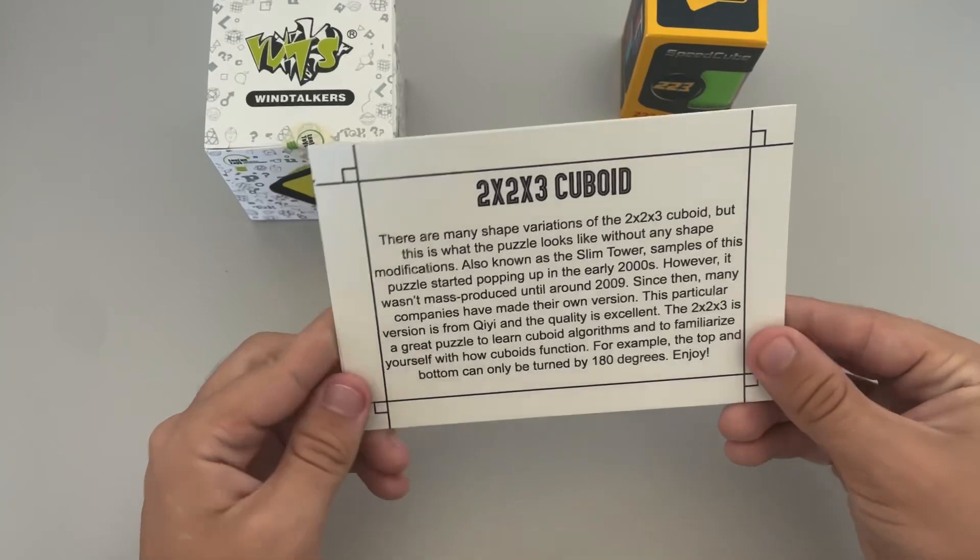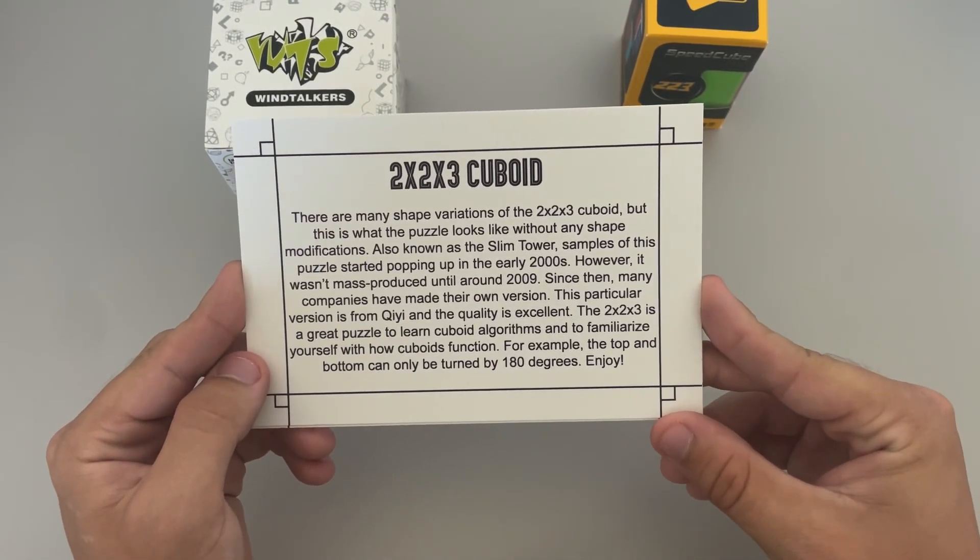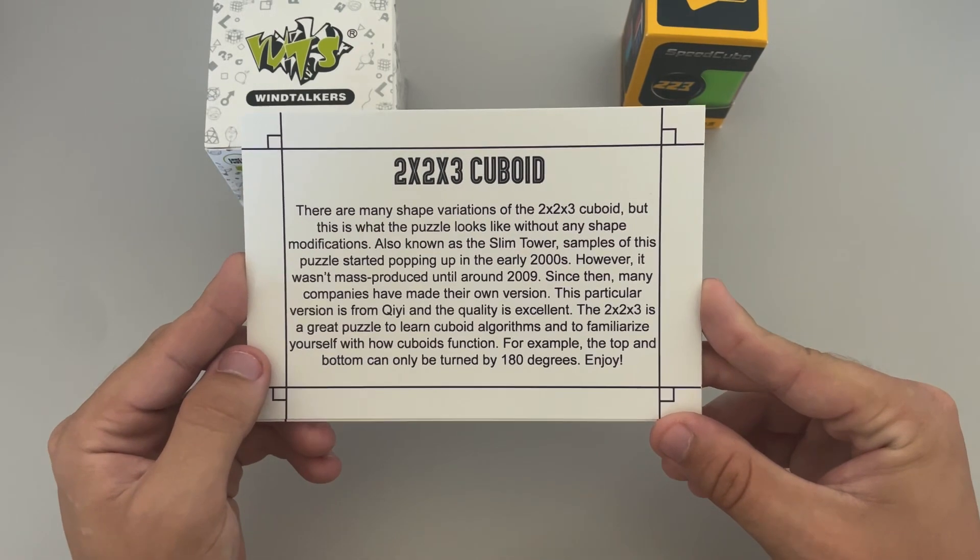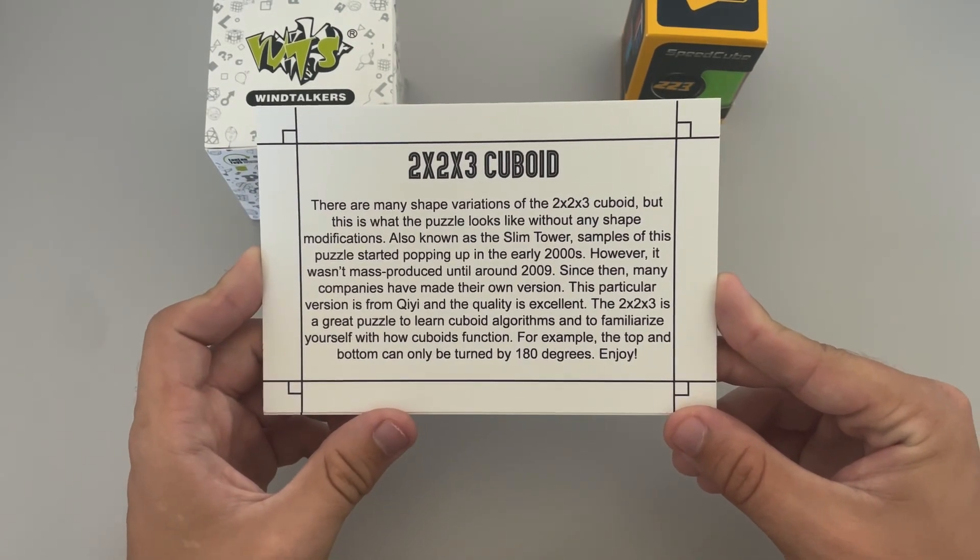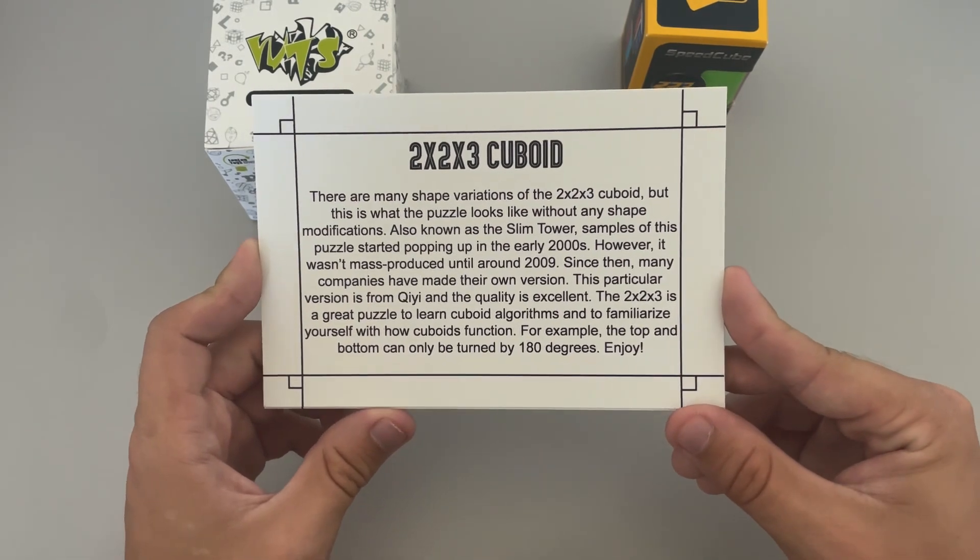And then the other one we have is the 2x2x3 Cuboid. There are many shape variations of the 2x2x3 Cuboid, but this is what the puzzle looks like without any shape modifications. Also known as the Slim Tower, samples of this puzzle started popping up in the early 2000s. However, it wasn't mass-produced until around 2009.